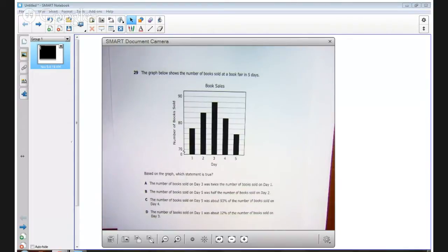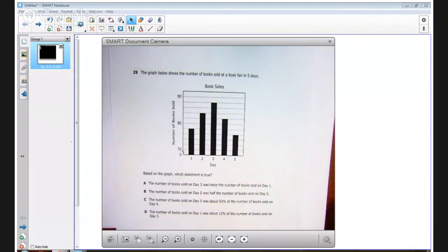Welcome to Texan Math. Today we're looking at item number 29. This item was missed by 66% of students in the state of Texas. So a very high number of students missed the item. Let's read it and take a look at it and discover what it is they found confusing.